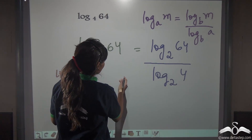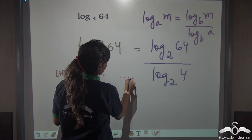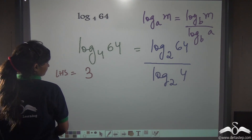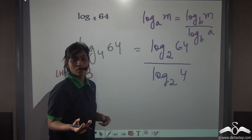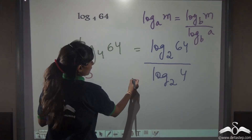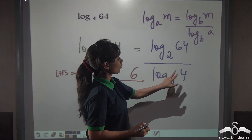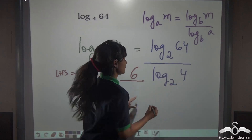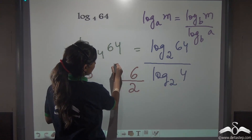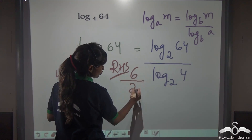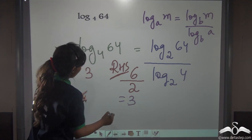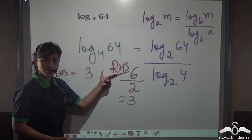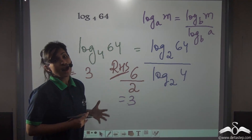The answer is 6, so log 64 to the base 2 is 6. And log 4 to the base 2 — how many times does 2 need to be multiplied to get 4? That is 2 times. So RHS is 6 divided by 2, which equals 3. We can see that the base changing formula actually works. So whenever you want to change the base to any other base, you use this formula.